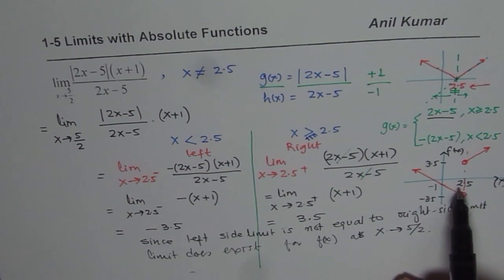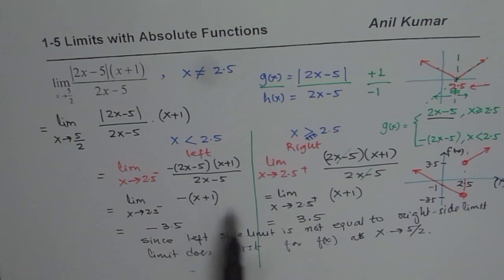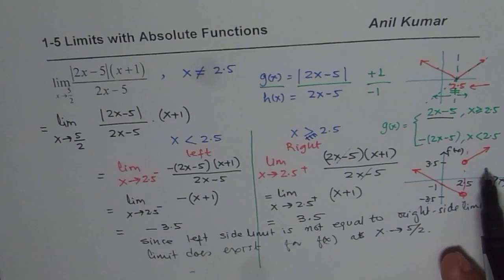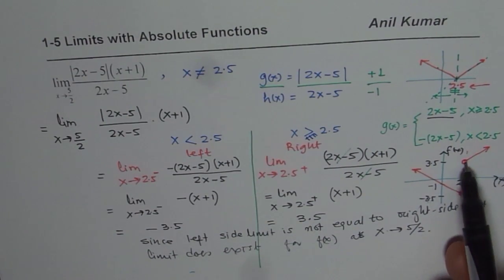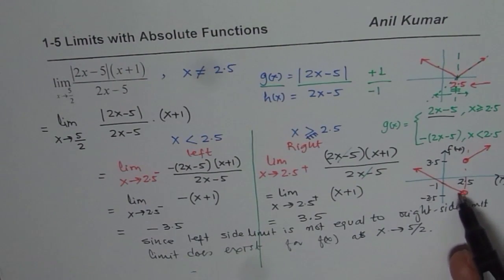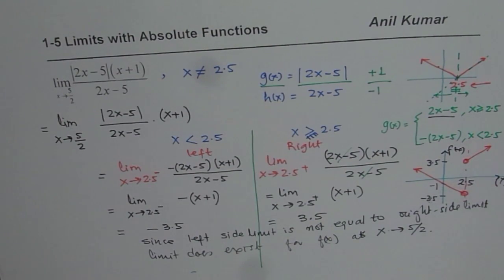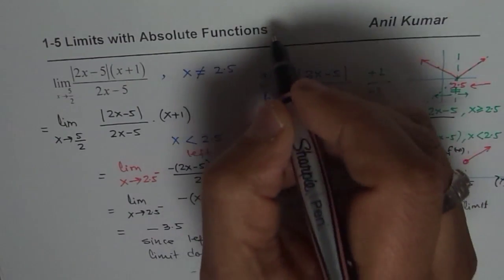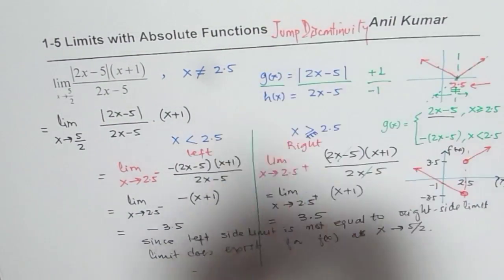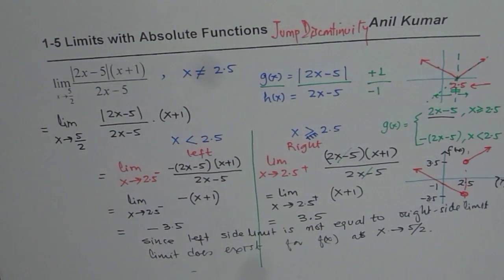On the left side of 2.5, the function is minus x plus 1, and the limit as we approach 2.5 is minus 3.5. On the right side, the function is x plus 1, and the limit as x approaches 2.5 from the right is plus 3.5. Since these two limits are not the same, the limit does not exist at x equals 5 over 2. This kind of discontinuity is called a jump discontinuity.